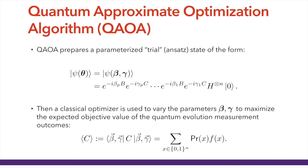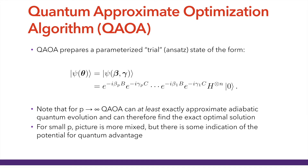At each step we prepare this parameterized trial state — each exponentiated operator has a parameter: beta for the mixer and gamma for the problem Hamiltonian. Then we use a classical optimizer to find optimal parameters such that the prepared state is as close as possible to the target eigenstate — the highest energy state of this Hamiltonian — giving as input to the optimizer the expected objective value of the measurement outcomes, the QAOA energy. We can compute it exactly in classical simulation, or estimate it from samples when using a quantum computer.